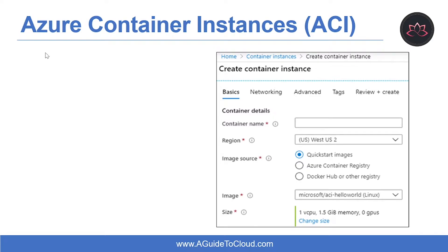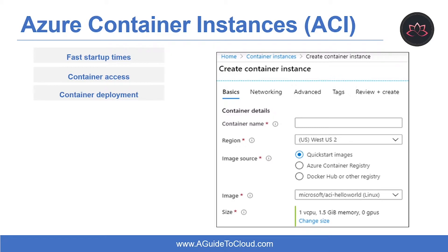So what are the features of Azure Container Instances? The first one is fast startup times — containers offer significant startup benefits over virtual machines, and Azure Container Instances can start containers in Azure in seconds without the need to provision and manage VMs. The second feature is container access: Azure Container Instances enable exposing your container groups directly to the internet with an IP address and fully qualified domain name. ACI also supports executing a command in a running container by providing an interactive shell to help with application development and troubleshooting. Another feature is container deployment — you can deploy containers from Docker Hub or Azure Container Registry.